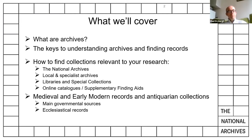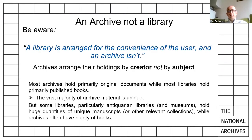I'm going to focus on medieval and early modern records and antiquarian collections, mainly on government sources but also touching on the church. First, the difference between an archive and a library. A library is arranged for the convenience of the user, whereas an archive isn't. Archives tend to arrange their holdings by the creator and the various functions that creator has — whether that be a government, an individual, or a group — and not by subject.